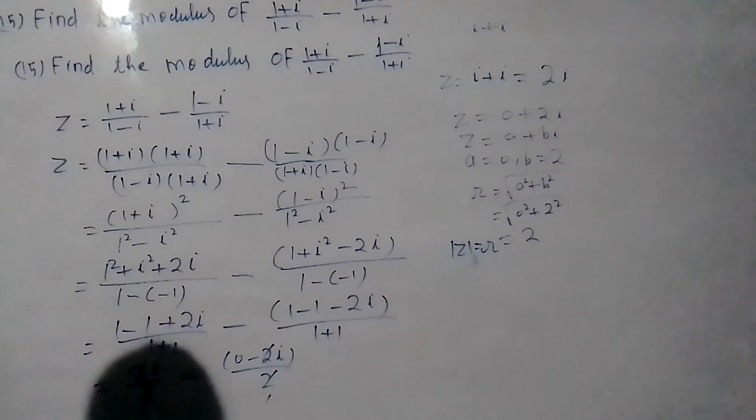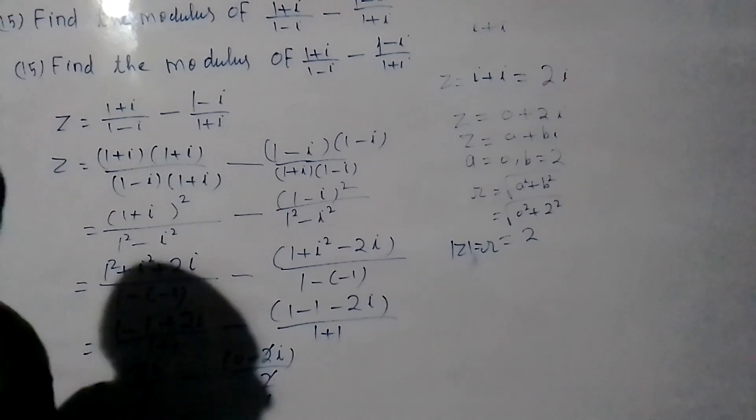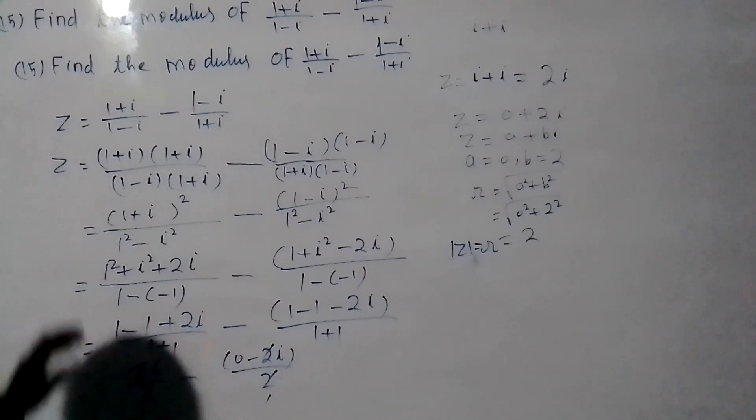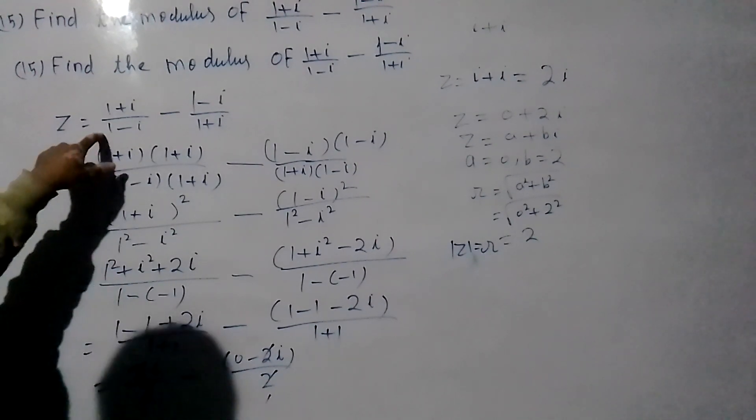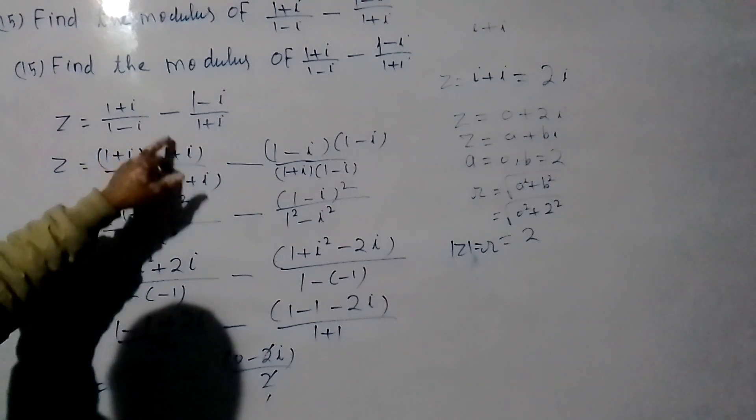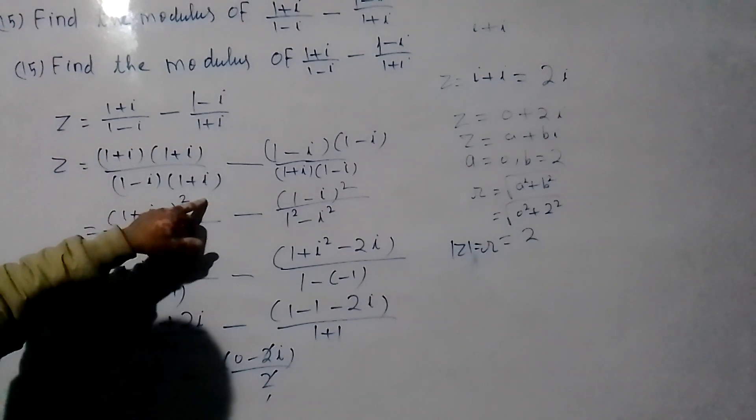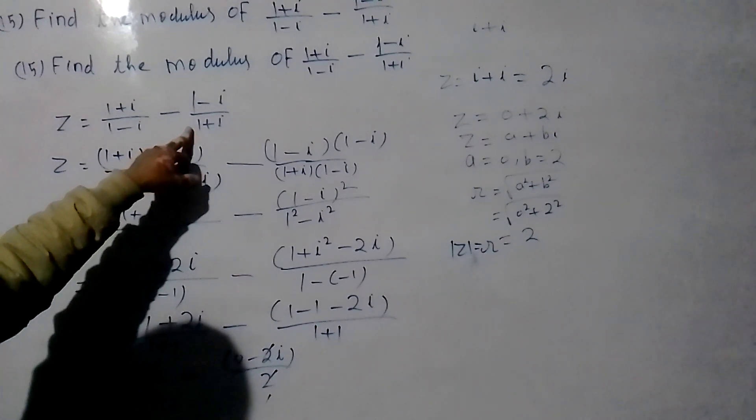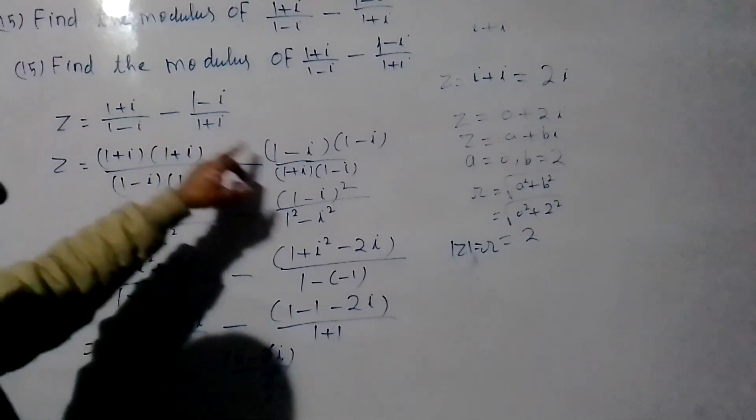So, we rationalize by multiplying the first term 1 minus iota by its conjugate 1 plus iota, and the second term 1 plus iota by its conjugate.